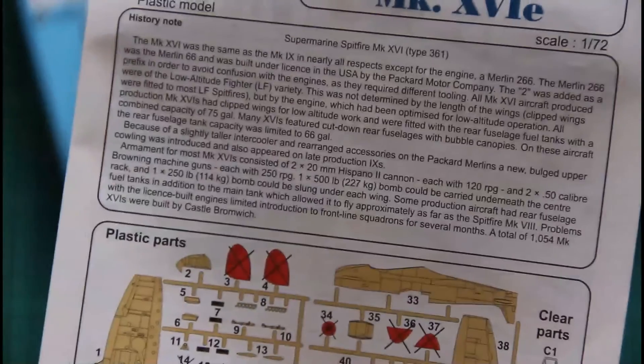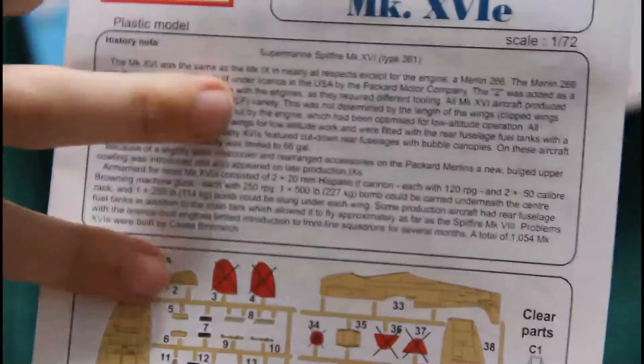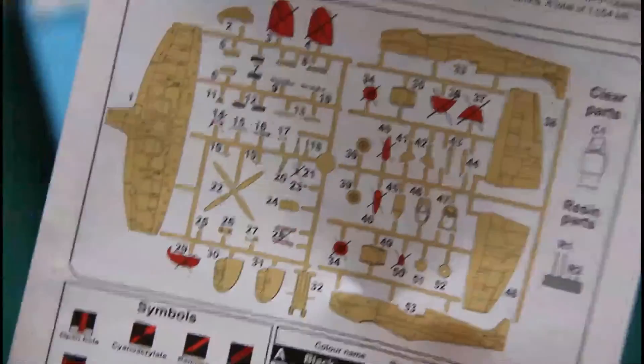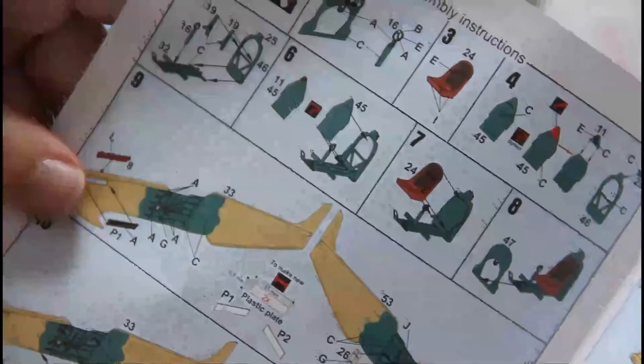And then we have a full color assembly manual, which features a bit of the airplane history, parts map as you can see here, and assembly instructions.